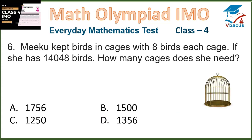Question 6. Miku kept birds in cages with 8 birds per cage. If she has 14,048 birds, how many cages does she need? We divide 14,048 by 8, and the answer is 1,756. So she requires 1,756 cages, which is option A.